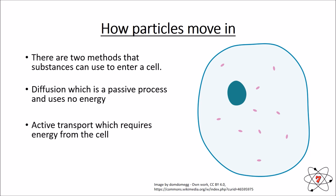Active transport is a process that requires energy from the cell — the cell has to spend its energy currency on making it work. There's also a third way that particles can move in and out, relating to water only. Diffusion of water and nothing else is called osmosis, which we'll look at in another lesson. Today we are mainly focusing on diffusion.